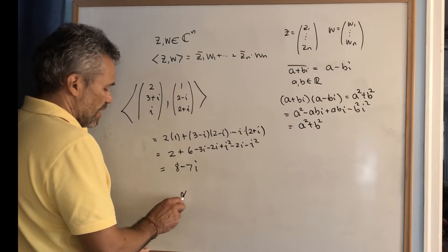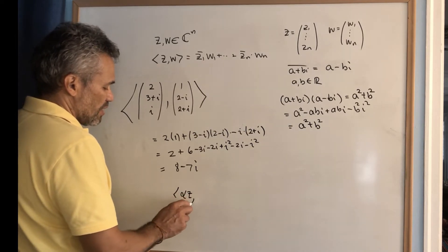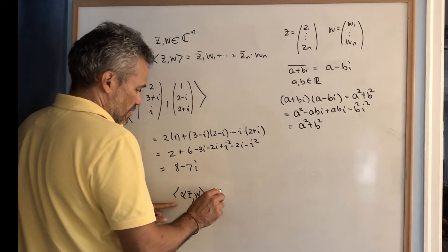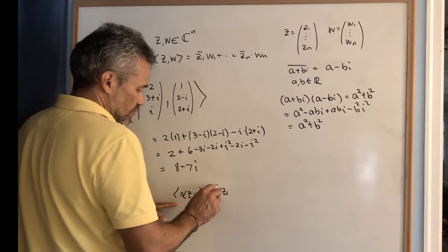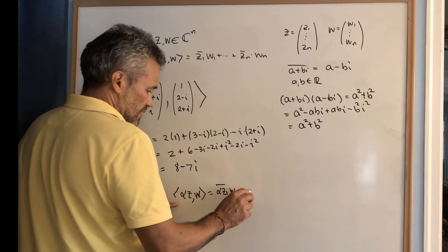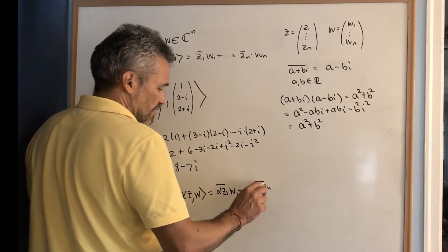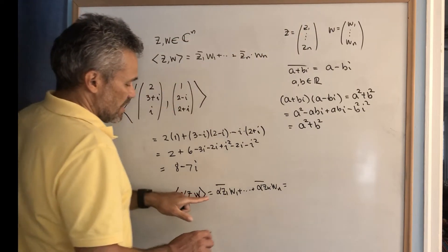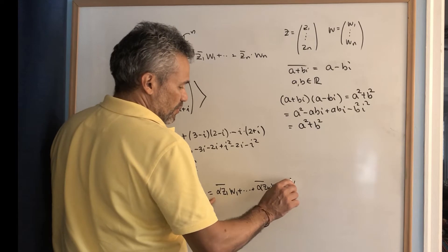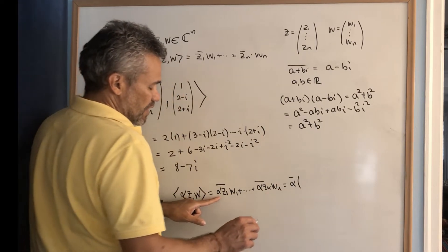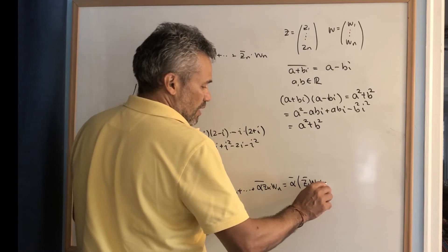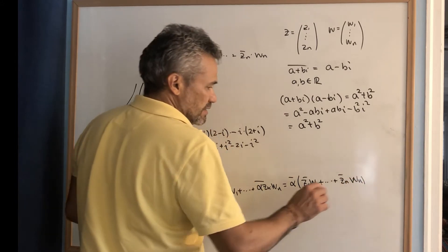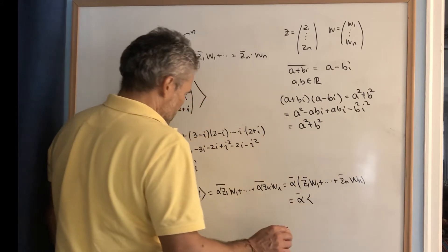Some properties that are easy to prove: if I multiply a complex number alpha by a vector c and take the inner product with w, I get the conjugate of alpha times c₁-conjugate times w₁ plus ... plus cₙ-conjugate times wₙ. Because the conjugate of a product is the product of conjugates, I can factor out alpha-conjugate, giving alpha-conjugate times ⟨c, w⟩.